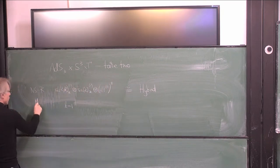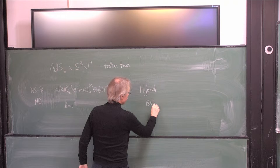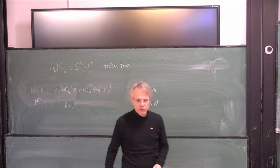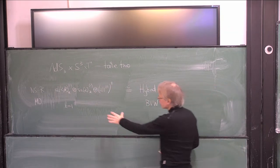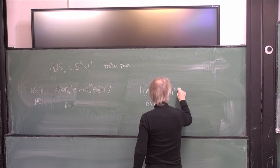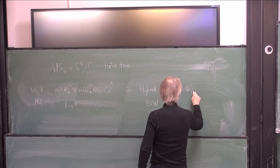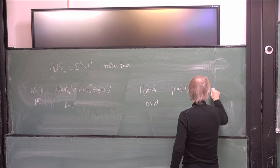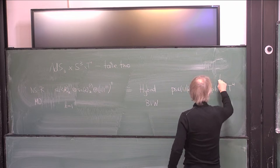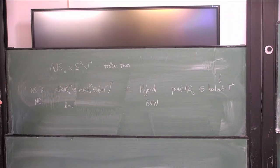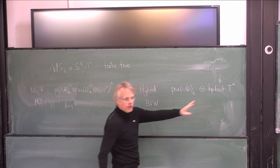This formalism was developed by Maldacena-Ooguri and is due to Berkovits, Vafa, and Witten. The idea of the hybrid formalism is that in some sense you go from the Neveu-Schwarz-Ramond sector to the Green-Schwarz description — all that amounts to is that you replace the piece that describes AdS3 cross S3 by a supergroup Wess-Zumino-Witten model based on PSU(1,1|2) at level K, and then you have the T4 theory, but you have to topologically twist the T4 theory.